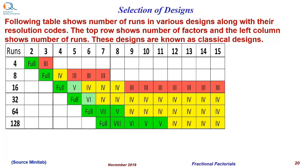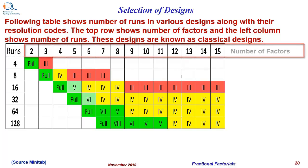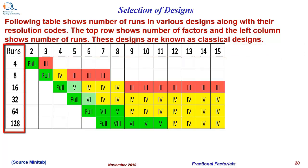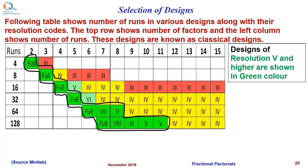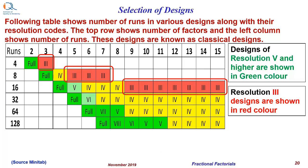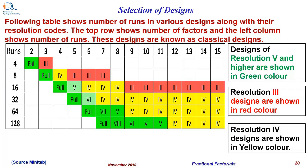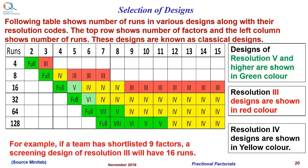Now let us see how to select designs based on the resolution codes. The following table shows number of runs in various designs along with their resolution codes. The top row shows number of factors and the left column shows the number of runs. These designs are known as classical designs. Designs of resolution code 5 and higher are shown in green color. Resolution code 3 designs are shown in red color, and resolution 4 designs are shown in yellow color. For example, if a team has shortlisted nine factors, a screening design of resolution 3 will have 16 runs.